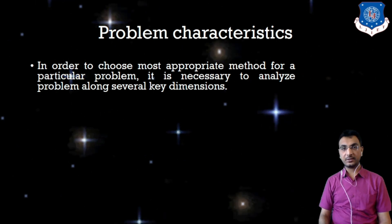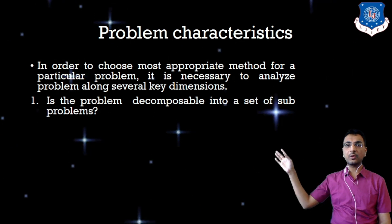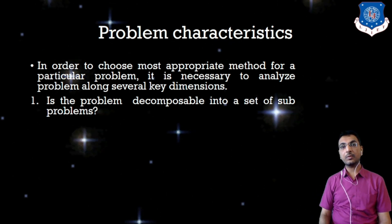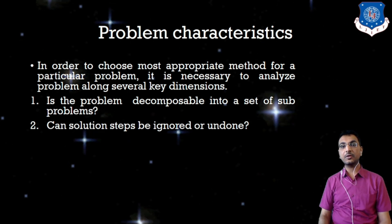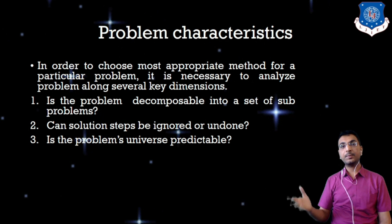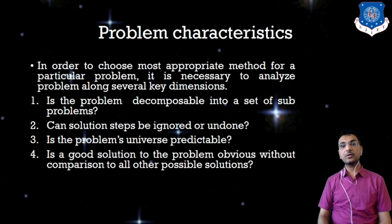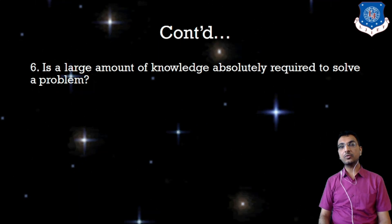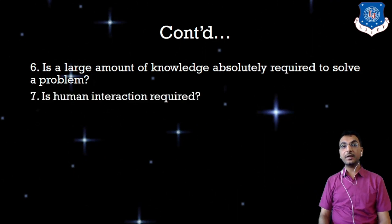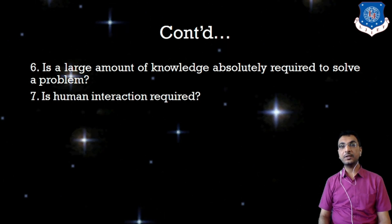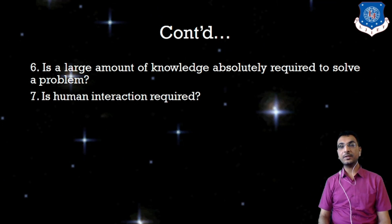The first characteristic is: is the problem decomposable into a set of sub-problems? Second: can solution steps be ignored or undone? Third: is the problem's universe predictable? Fourth: is a good solution to the problem obvious without comparison to all other possible solutions? Fifth: is the desirable solution a state of the world or a path to a state? Sixth: is a large amount of knowledge absolutely required? Seventh: is human interaction required? These seven characteristics will be studied in two parts.